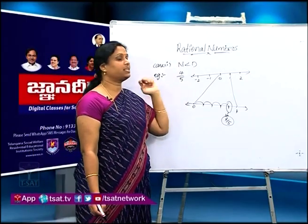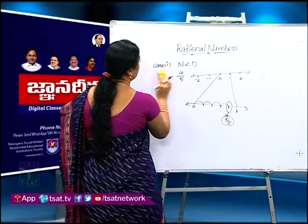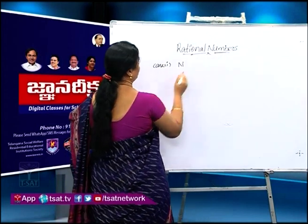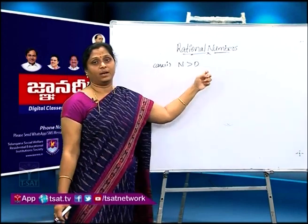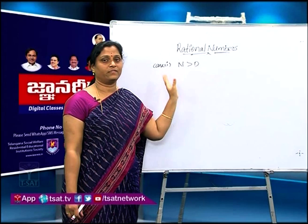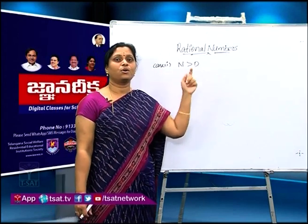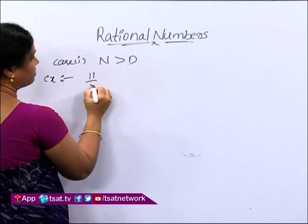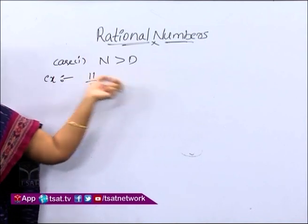This is about Case 1, where numerator is less than denominator. Now we go to Case 2. If the numerator is greater than the denominator, we call this an improper fraction. To represent these numbers on the number line, the first step is to convert the improper fraction to a mixed fraction. I am taking 11/5. Here the numerator is greater than the denominator, so this is an improper fraction.